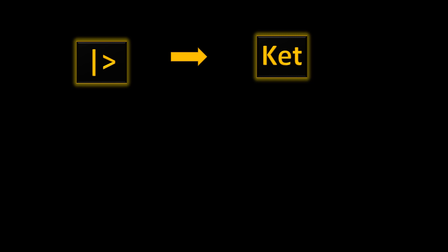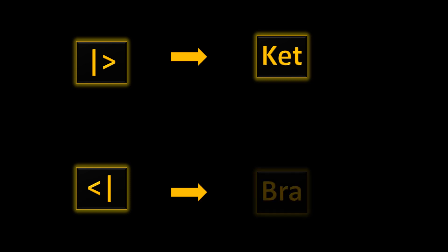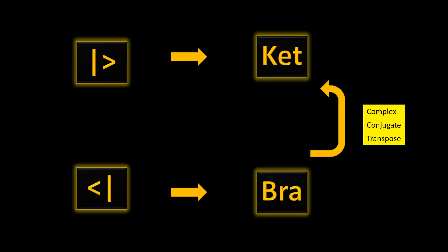This notation is called the ket. In Dirac notations there is one more notation called the bra, and the bra is nothing but the complex conjugate transpose of the ket. Let's understand this a bit more mathematically.